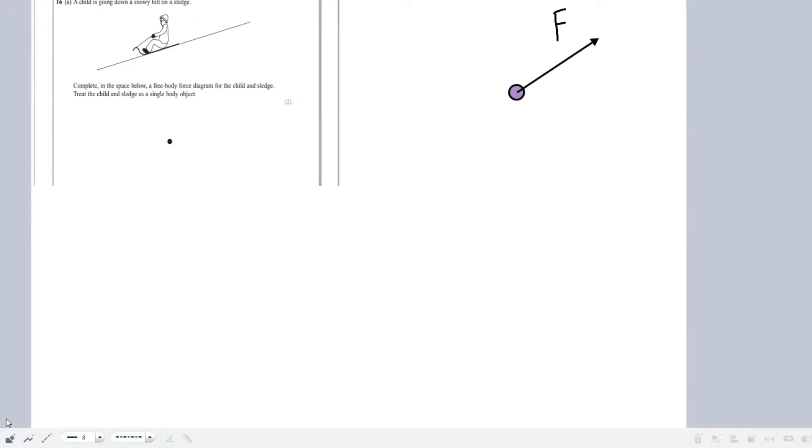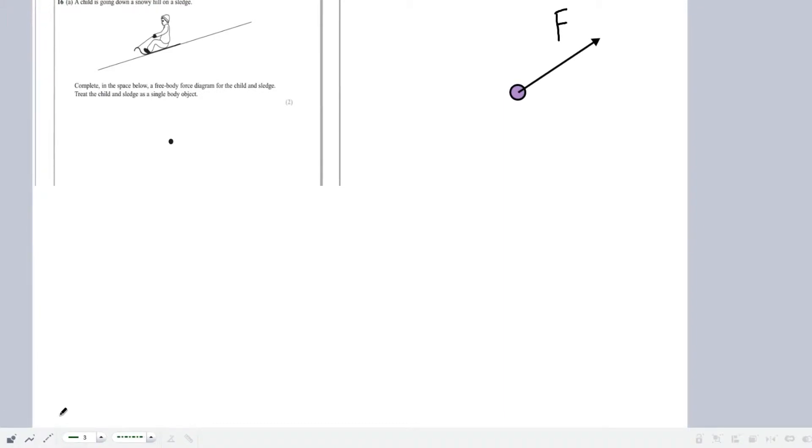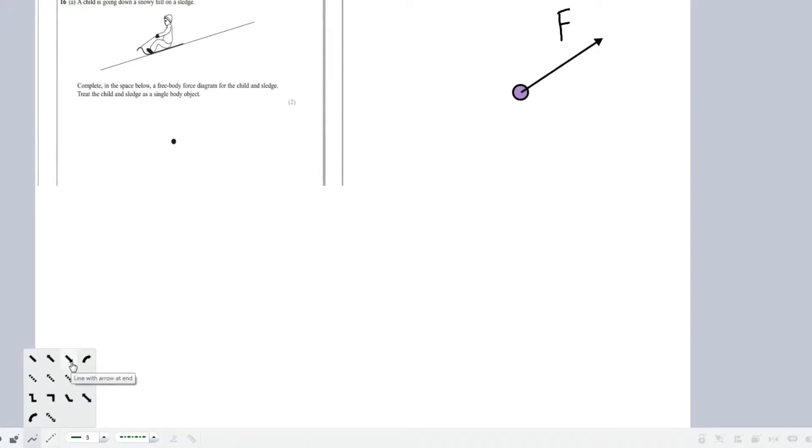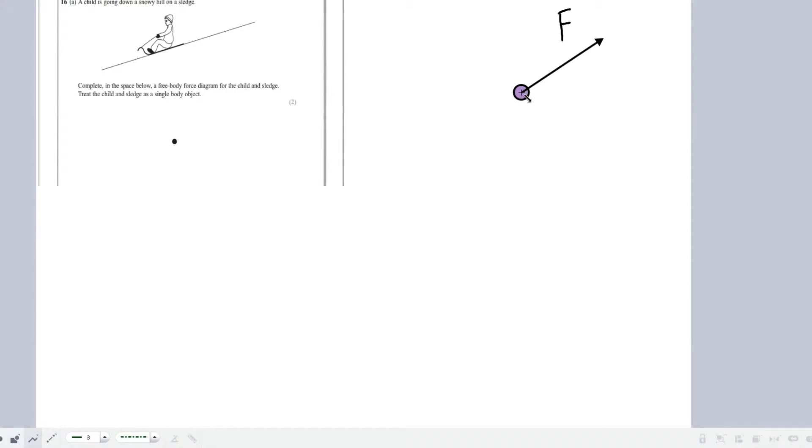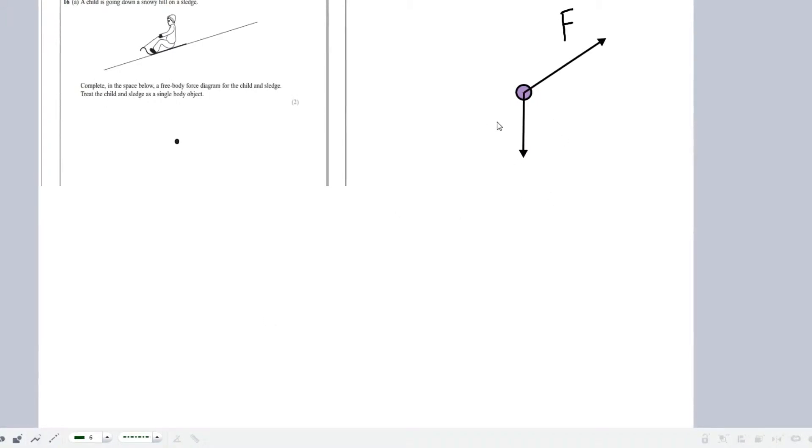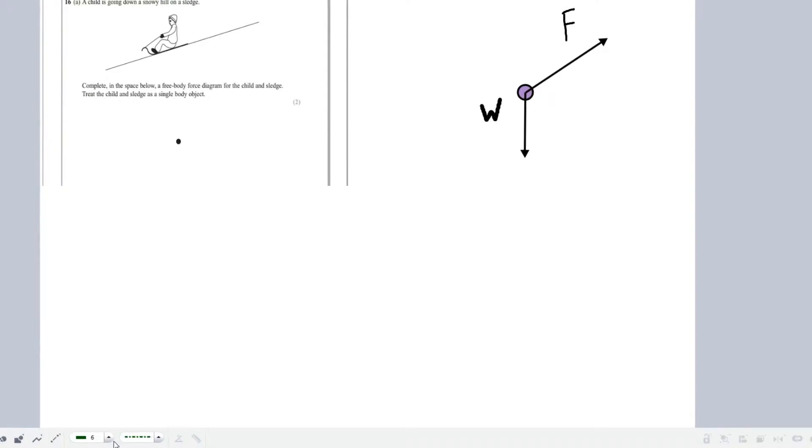What's the next force that we can think of? Probably the one that is pulling him down the hill, and that's the gravitational force, the force of his own weight. The gravitational force always acts directly down, no matter what angle, no matter what hill. So let's draw that arrow straight down and label it W for weight. However, you could label it MG, or you could even call it gravitational force.